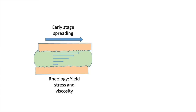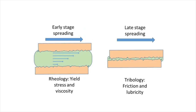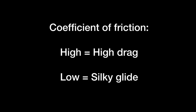In the later stages of the application, that layer of product gets thinner and thinner and then we get into a direct skin-on-skin interaction. At that point, where we've got these two surfaces interacting with each other, we're into a tribological situation. And so the tribology — the friction and the lubricity of the product — becomes more relevant.